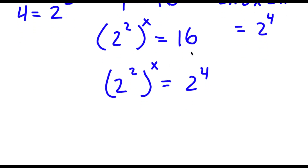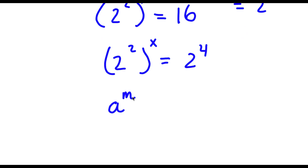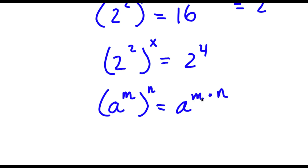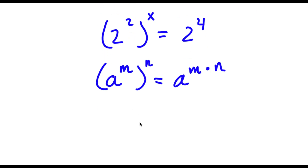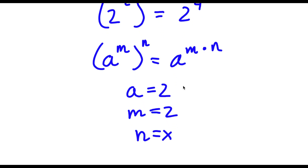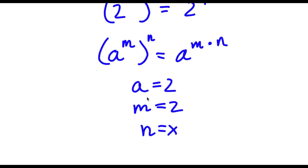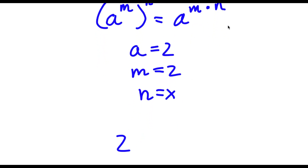Now if I have something in the form a to the power of m to the power of n, this is the same thing as a to the power of m times n. So in the case of 2 to the power of 2 to the power of x, we can think of a as 2, m as 2, and n as x. So this equals 2 to the power of 2 times x, which is the same thing as 2 to the power of 2x.